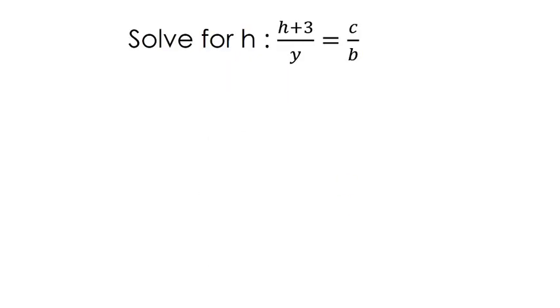On this example, it says solve for H. So you always got to be careful with these because you might be solving for a different variable every time. We're going to solve for that H right there. And so let me just recopy real quick. We have H plus three over Y equals C over B.